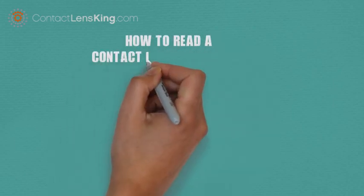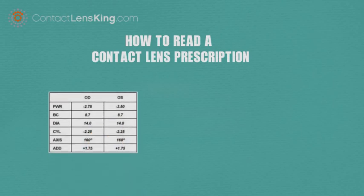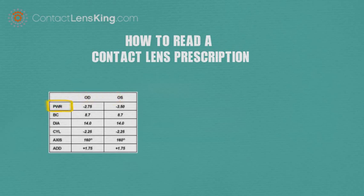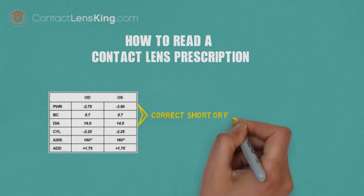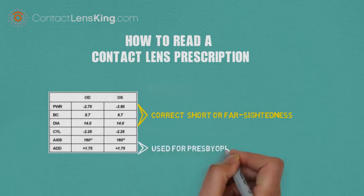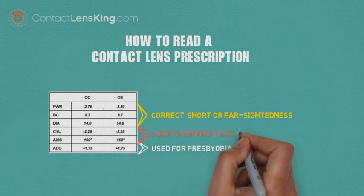How to Read Contact Lens Prescriptions. Contact lens prescriptions usually contain the following parameters: OD and OS, Power or Sphere, Base Curve, Diameter, Cylinder, Axis, and ADD. The power, base curve, and diameter are used to correct short or far-sightedness. The ADD is used for presbyopia prescriptions. And the Cylinder and Axis are used to correct astigmatisms.